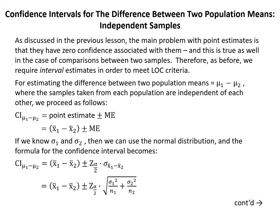The main problem with point estimates is that they have zero confidence associated with them, and this is true as well in the case of comparisons between two samples. Therefore, as before, we require interval estimates in order to meet level of confidence criteria.